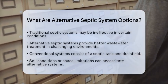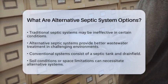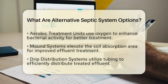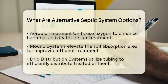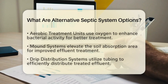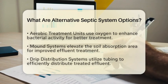There are several types of alternative septic systems. One popular option is the aerobic treatment unit. This system uses oxygen to boost bacterial activity, making it more effective at treating nutrients and pathogens. It is particularly useful for smaller lots or areas with high water tables.